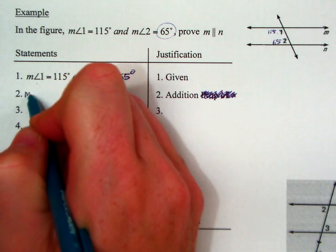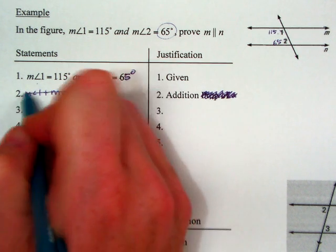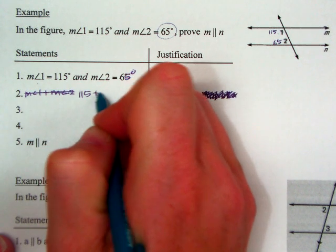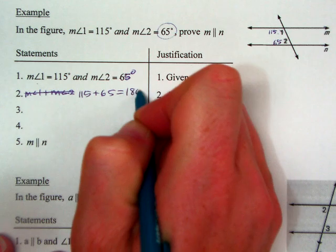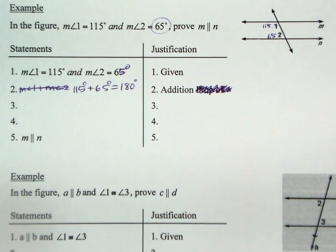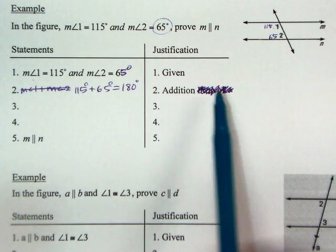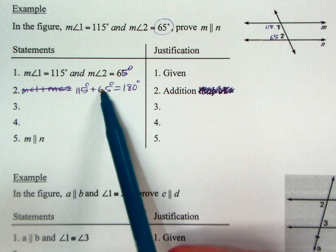Let's say the measure of angle 1 plus the measure of angle 2. Sorry, 115 plus 65 equals 180. I was trying to make a jump too fast. So I'm adding two numbers together to get the third. I didn't add something to both sides, which is why it's not addition property of equality. I'm just adding two things together, which makes it addition.